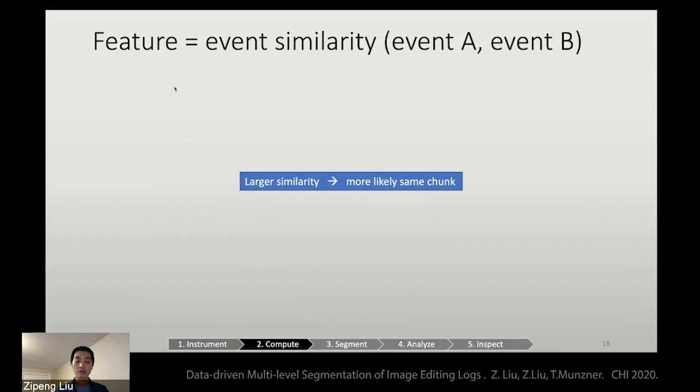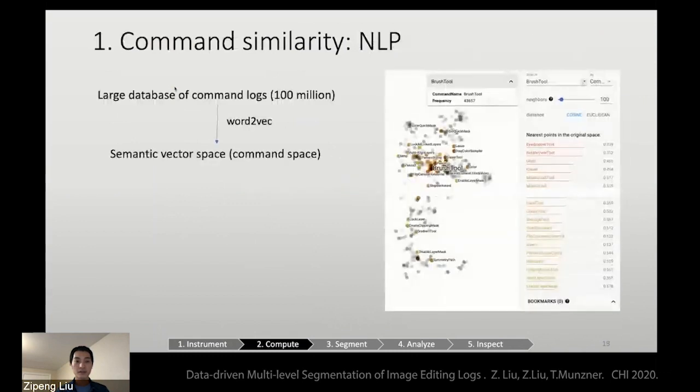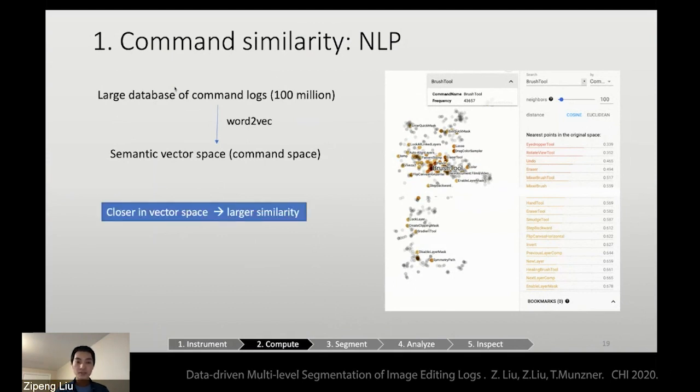So I will introduce the different measures for event similarities. So the first one is command similarity. From a large database of command logs, we use Word2Vec to train a semantic vector space, or we can call it command space. And then we'll visualize this command space on 2D on the right. And we conjecture that if two commands are closer in the vector space, the two events will have larger similarity.